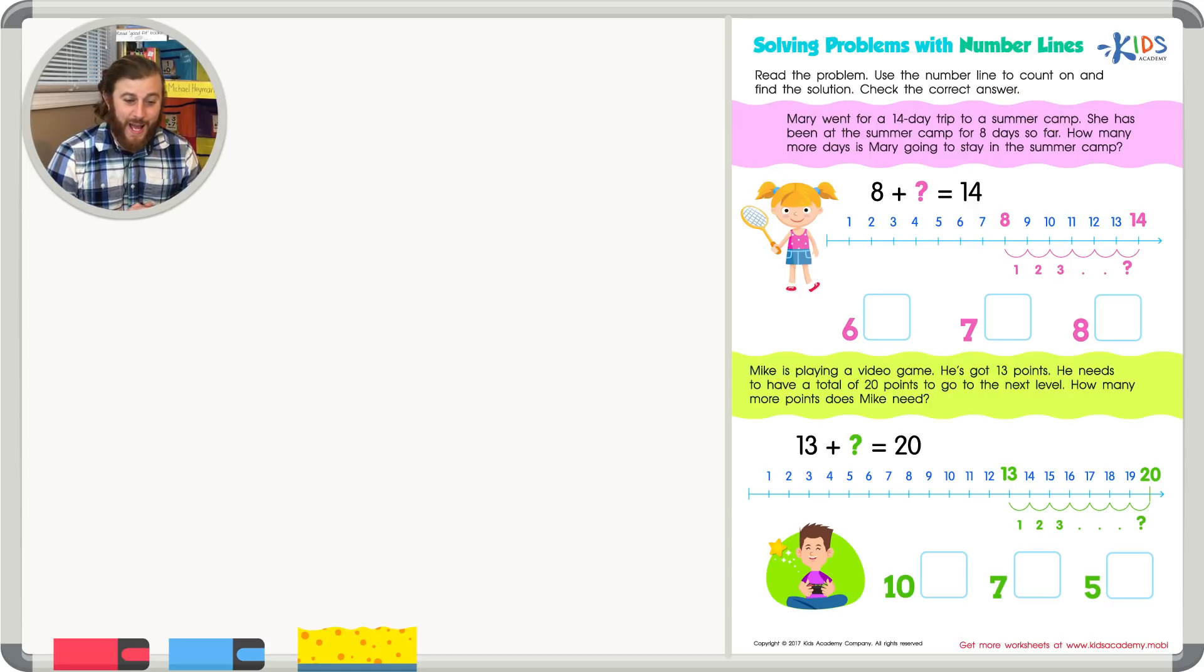Problem 1. Mary went on a 14 day trip to a summer camp. She has been at the summer camp for 8 days. How many more days is Mary going to stay at the summer camp? Okay. In this problem we know Mary has been at the summer camp for 8 days. We don't know how many more days she's going to stay at the summer camp, but we do know she has been there for a total of 14 days.